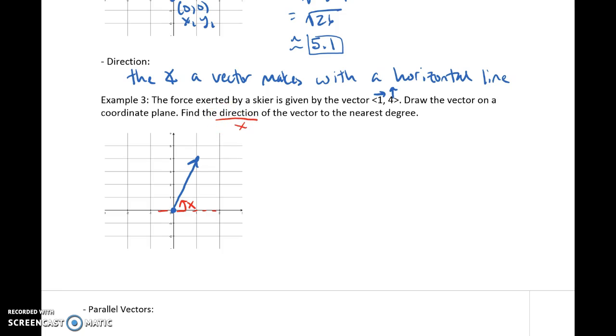How am I going to use the components to find it? Well, remember that right triangle I pointed out earlier? Use your rise and your run to get that right triangle. So we have a run of 1, a rise of 4. I'm going to redraw this really quick. So here's my right triangle. I'm looking for x. I have 1. I have 4. What is the correct trig ratio?